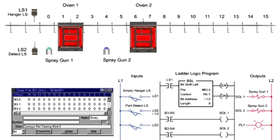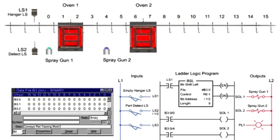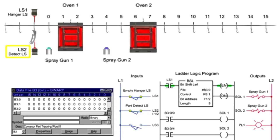As hooks are detected by LS1 limit switch, bits are shifted in file B30 from left to right. When parts are detected by the LS2 limit switch, logic 1 is loaded into the first bit of the shift register.